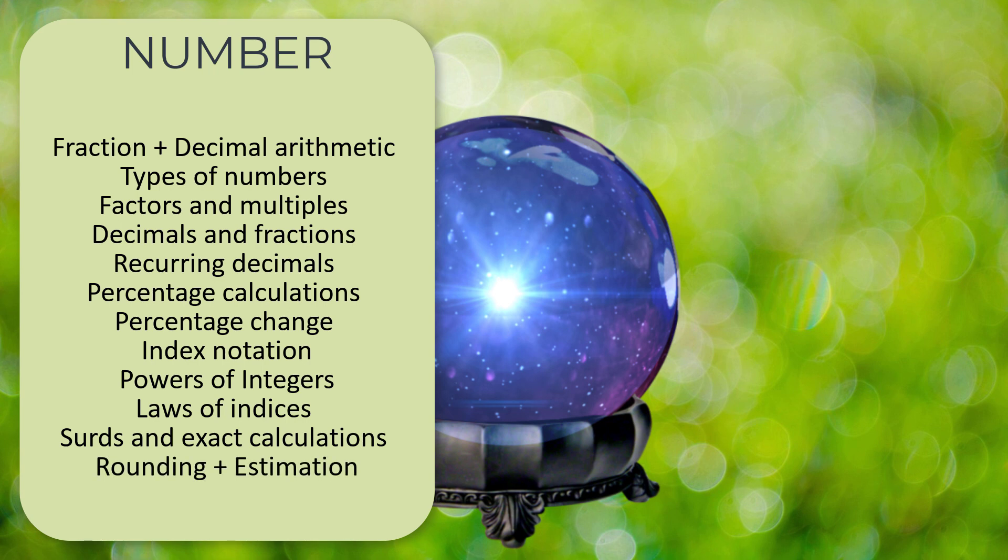Next up, rounding. So knowing how to round a number to a given number of decimal places or significant figures. And then we've got estimation. Now this catches a lot of people out every year. You're normally given quite a complicated looking calculation, but you're not meant to just do it. You're meant to round each number off to one significant figure and then do the calculation. Don't get confused. Make sure you read the question. If there's words in a question, read the words. Don't just look at the pictures.